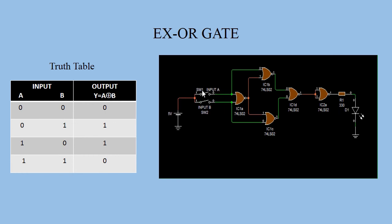Second condition: input A is 0 (switch 1 is open) and input B is 1 (switch 2 is closed) — A=0, B=1. This is 0 line, this is 1 line. This is 1 line, so from here we get 0. From here we get 0. This is 0 line and this is 0 line, so from here we get 1. This is 0 and this is 1, so from here we get 0. This 1 and 0 line is connected with this NOR chip, so from here we get 0. This 0 is connected with the inverter circuit, so from here we get LED in on condition.